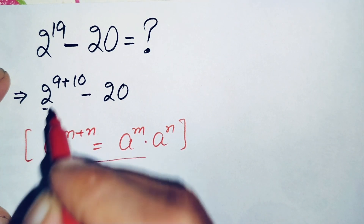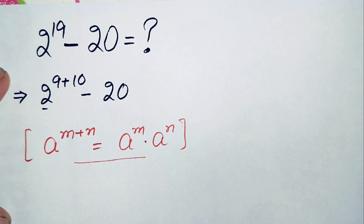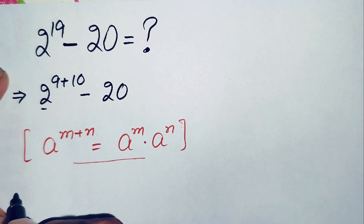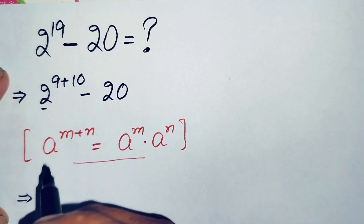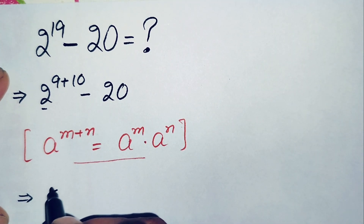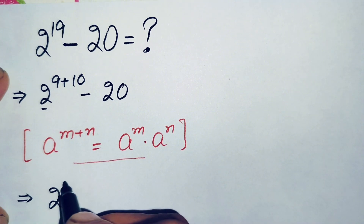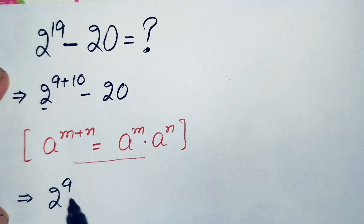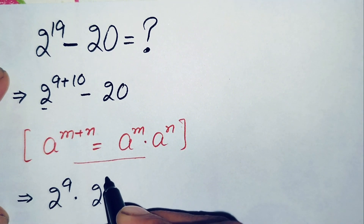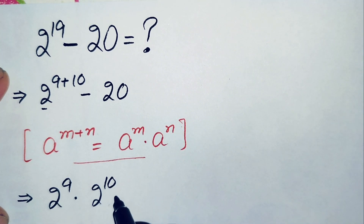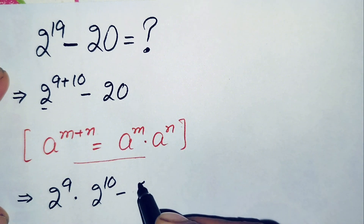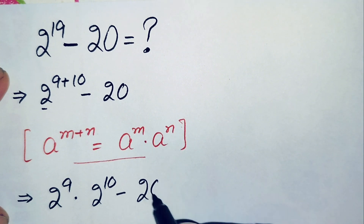Now using this exponent math property, the first number will become: this implies it will become 2 raised to power 9 times 2 raised to power 10, minus 20.